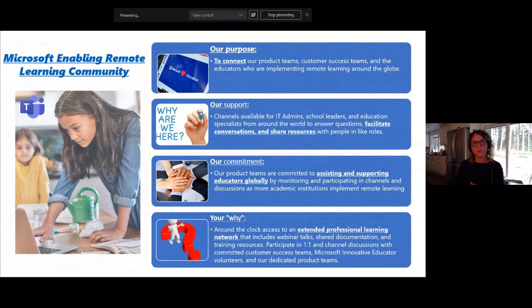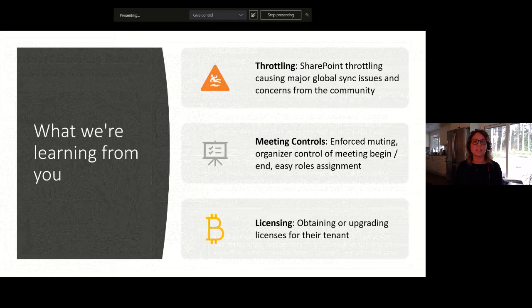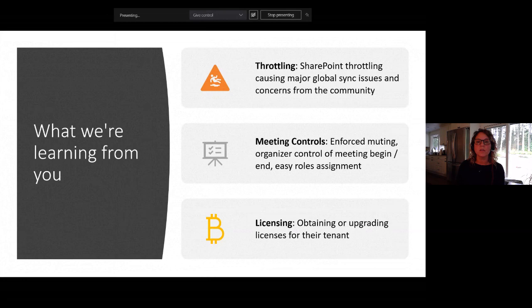Through conversations in the community, we've learned there are some service issues we're following up on, new features required to fully support a remote learning environment around meetings and controls, and a lot of licensing challenges that are hard for users to understand. All of these came directly out of the community, and it's information we can get to the right support pathways and bubble up to leadership to make sure we have the right support to fix things once and for all.